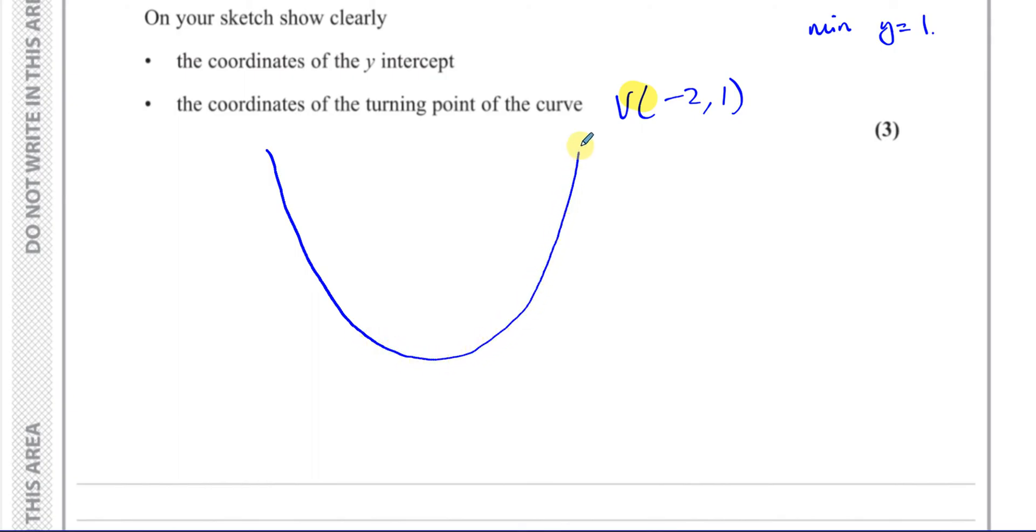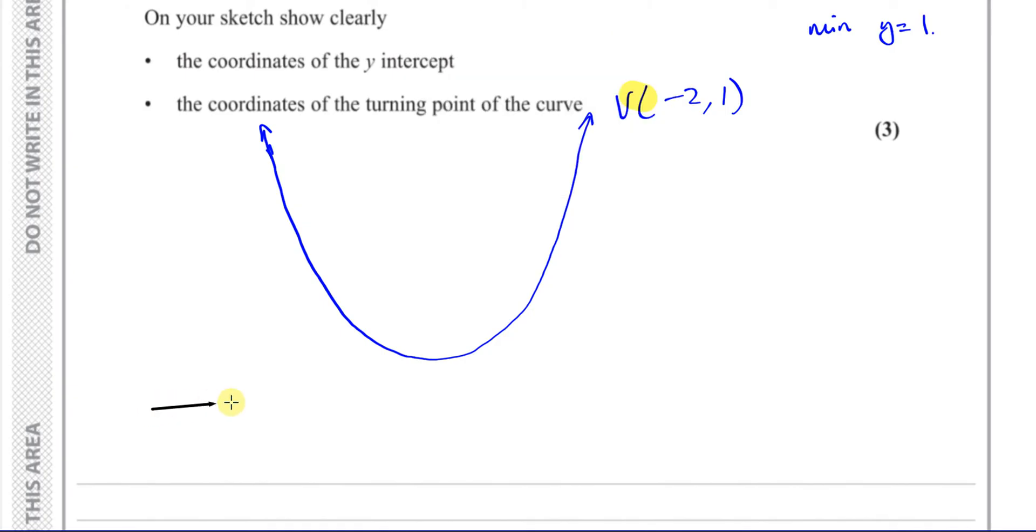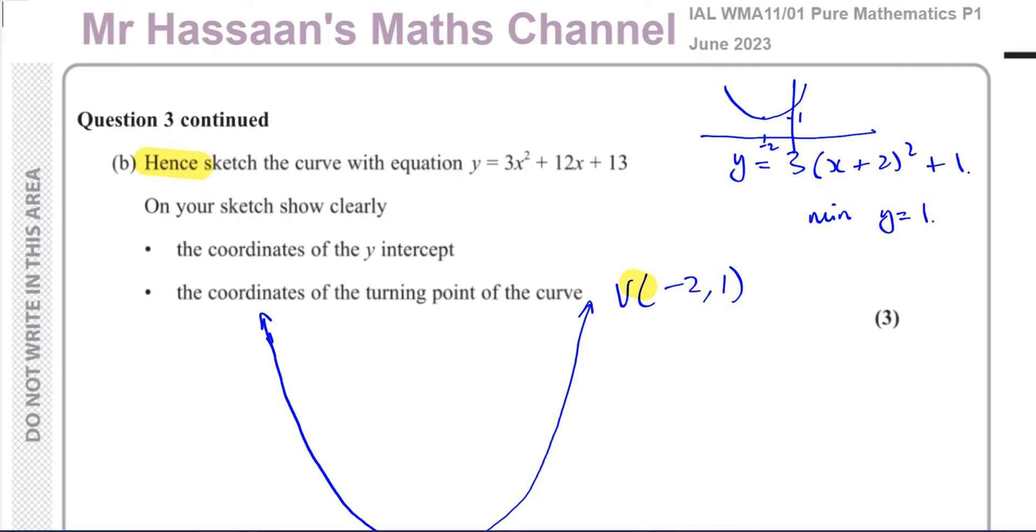If you wanted to confirm that never crosses the x-axis in another way, you could try to solve this equation. If you try to solve where 3(x + 2)² + 1 = 0, then you'd have 3(x + 2)² = -1, so (x + 2)² = -1/3. When you try to solve this, there'll be no solution, because you're trying to find the square root of a negative number. That confirms what we already understand.